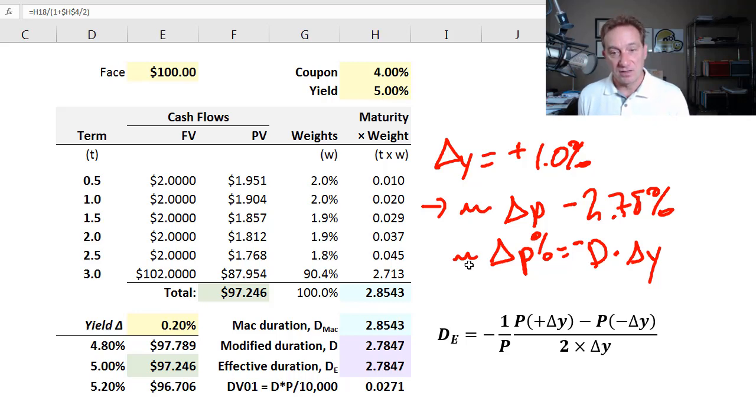And emphasis on this approximation, approximately, because with duration, it's only a linear approximation. It's not accounting for convexity.